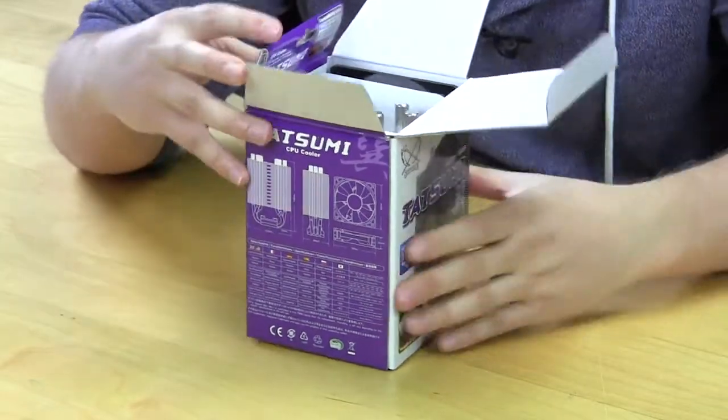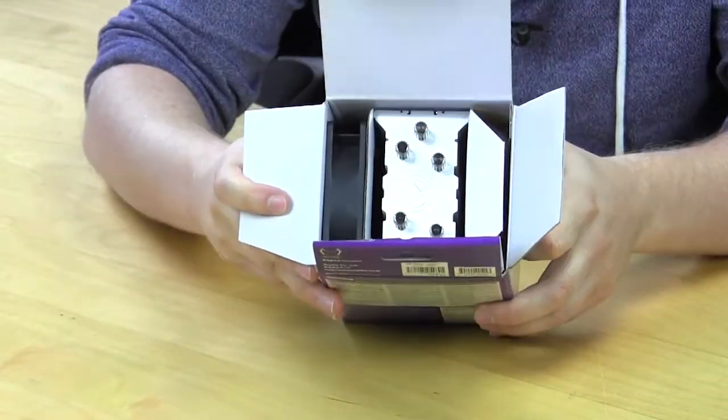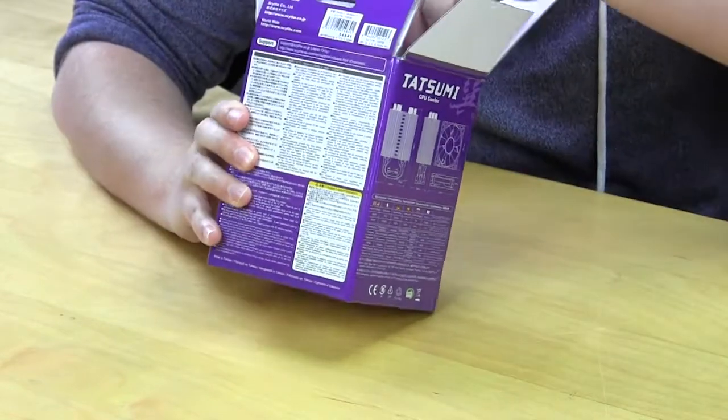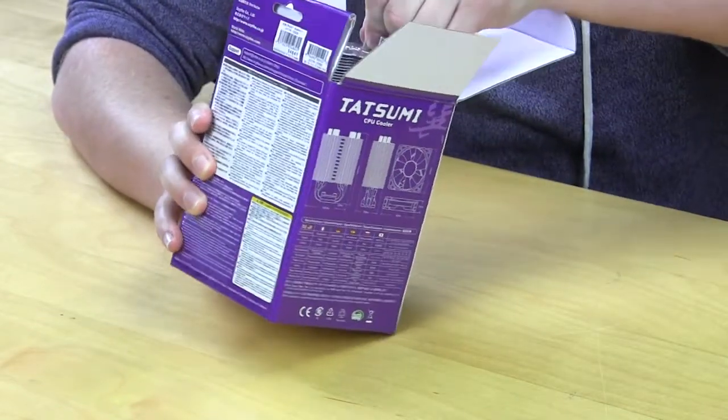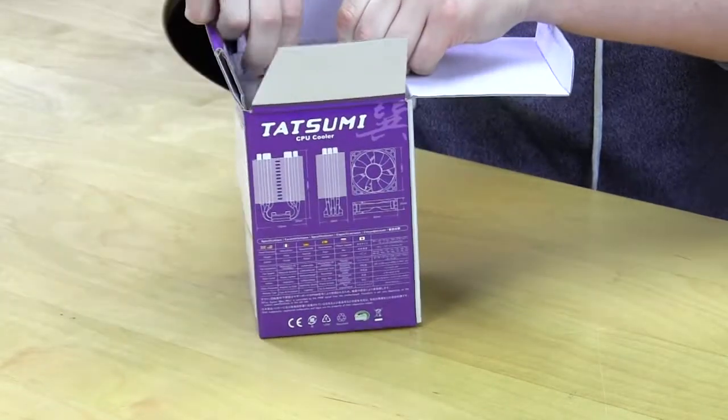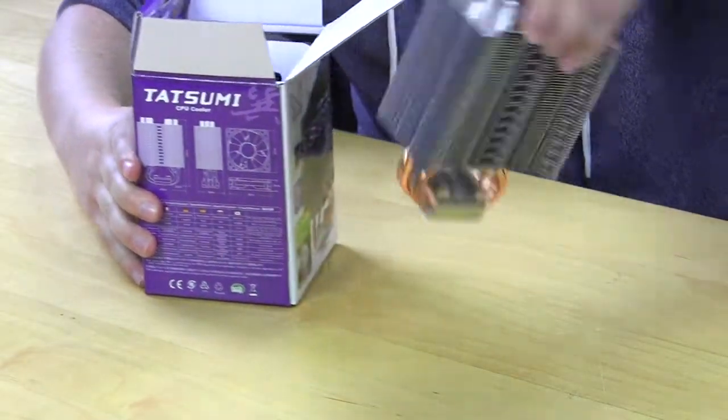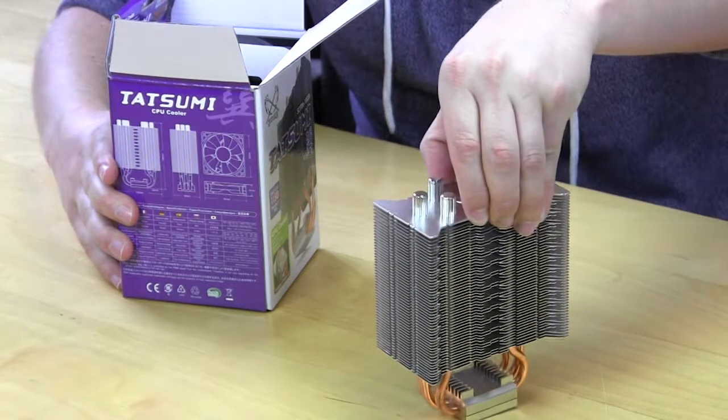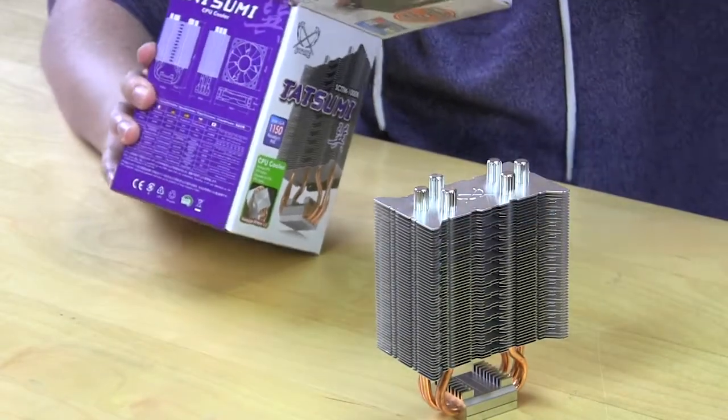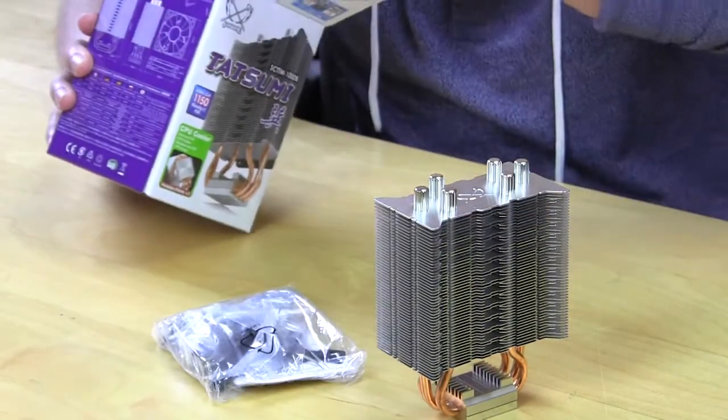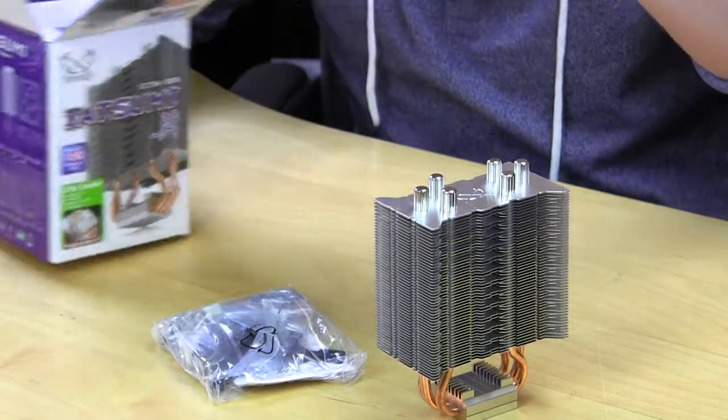So it looks like everything comes nicely protected as you can see here and we'll try to get it all out. So we have the heat sink part first. I'm going to try to do this. There we go. So we have the actual heat sink. And it looks like this is going to be all of our mounting hardware and then our cooling fan.